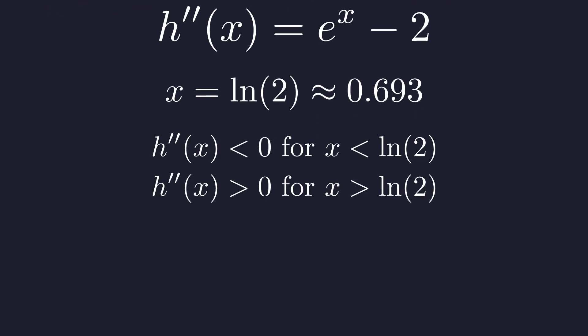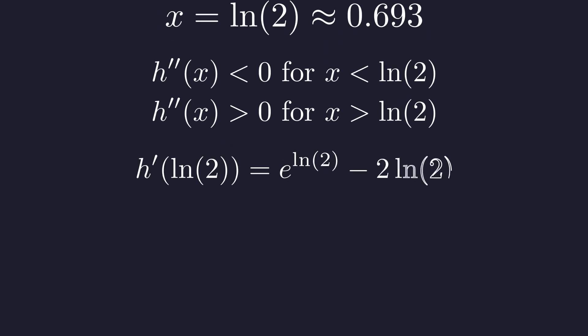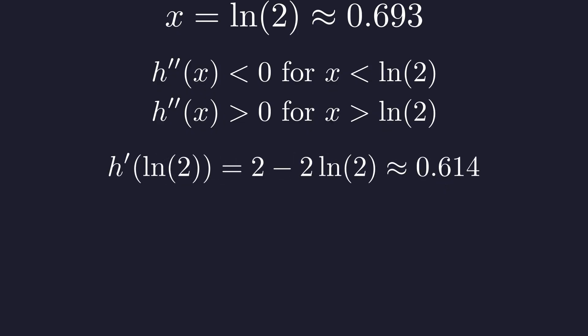Since e to the x is always increasing, the second derivative is negative before this point and positive after. So ln of 2 is where h prime reaches its minimum. Let's evaluate h prime at this critical point. h prime of ln of 2 equals e to the ln of 2 minus 2 times ln of 2. e to the ln of 2 simplifies to just 2, so we get 2 minus 2 times ln of 2, which works out to about 0.614. Still positive.